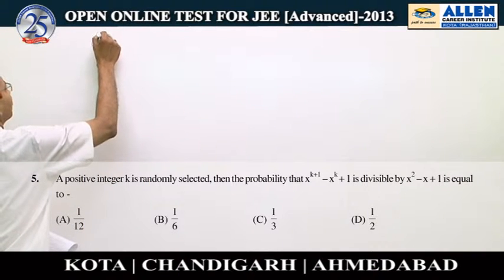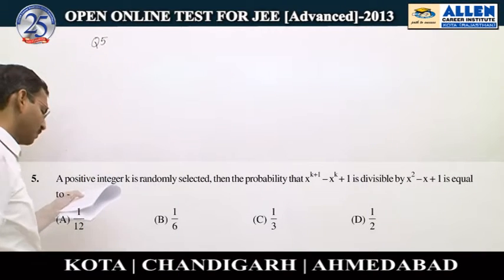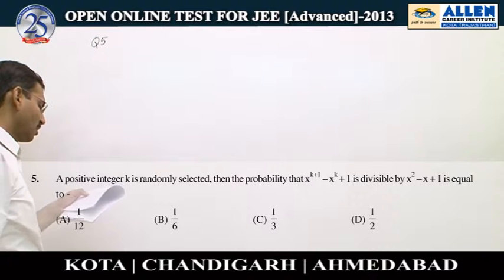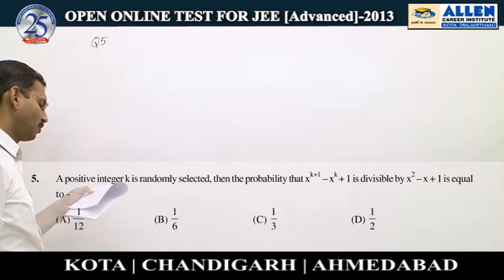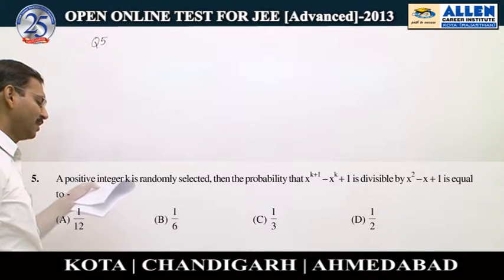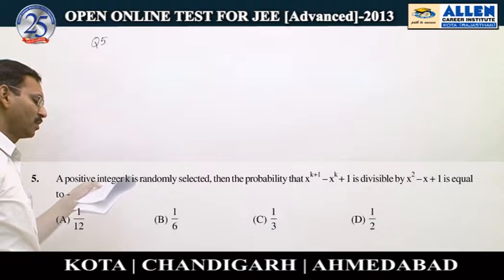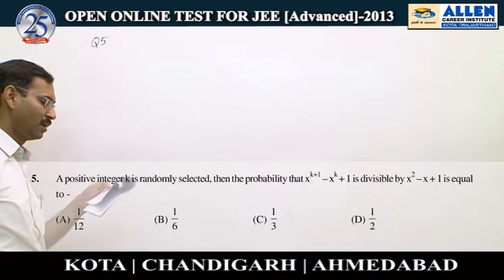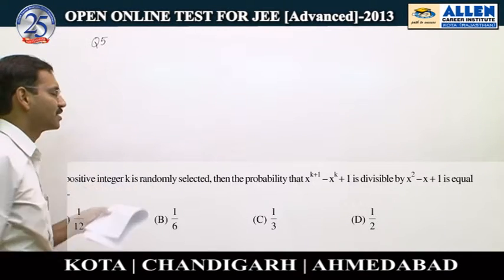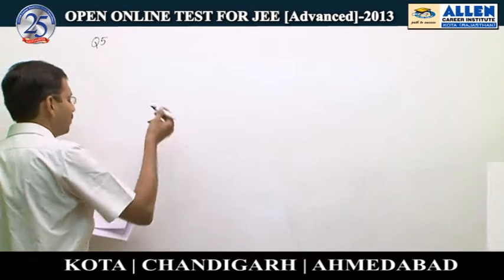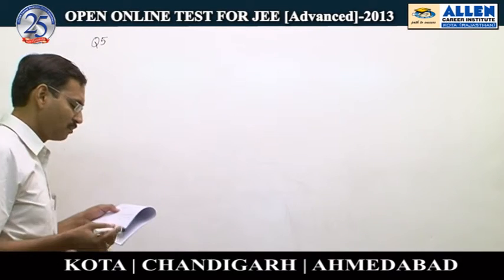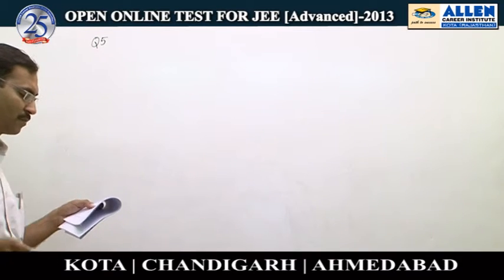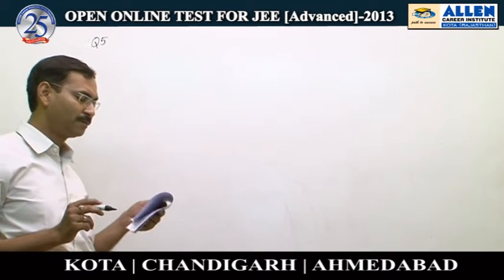Question number 5. A positive integer k is randomly selected. We have to think about the positive integer k. As the first expression is divisible by the second one, it means both the roots of the equation should be common.